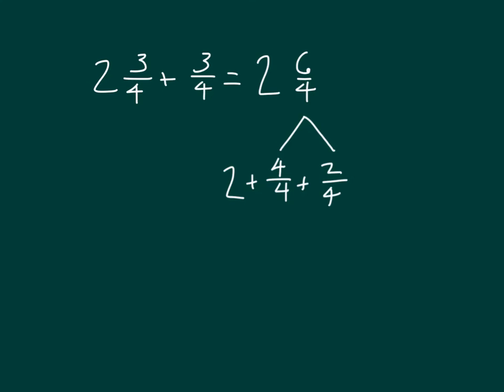4 fourths again is equal to 1. So 2 and 1 equals 3. And so we have 3 and 2 fourths. So that 2 and 6 fourths equals 3 and 2 fourths. When we go ahead and simplify that, we get the mixed number 3 and 1 half. 2 and 3 fourths plus 3 fourths equals 3 and 1 half.